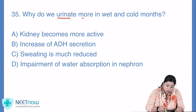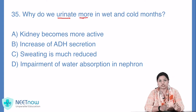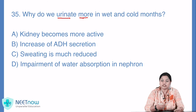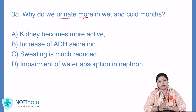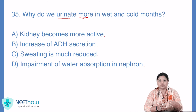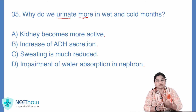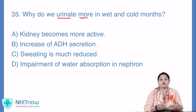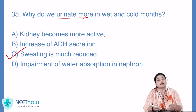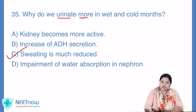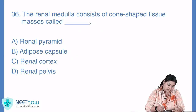Question number 35: why do we urinate more in wet and cold months? Garmi ki apeksha barishon mein ya thande maheenon mein hum log zyada urinate kyun karte hain? Options: kidney becomes more active, increase of ADH secretion, sweating is much reduced, or impairment of water absorption in nephron. Generally barishon aur thand mein sweating nahi hoti — paseena nahi aata. Toh jo paani hai woh hamare body ke andar hi rehta hai. Usko excrete karna hai toh obviously urine formation zyada hogi. Simple reason — sweating is much reduced. So option C yahan correct hai.